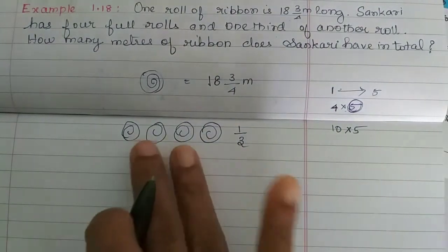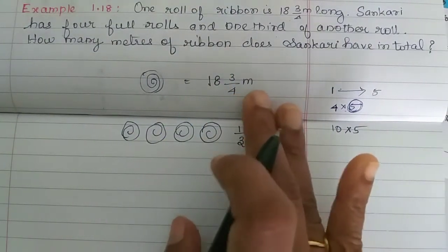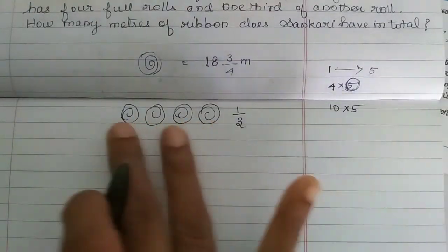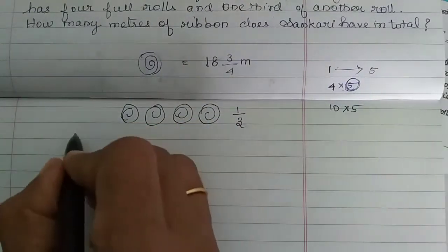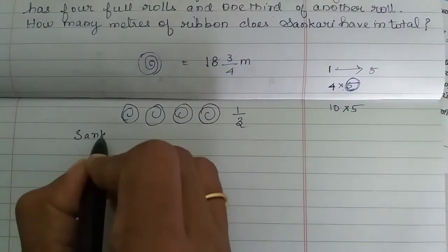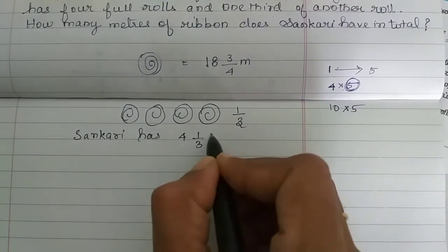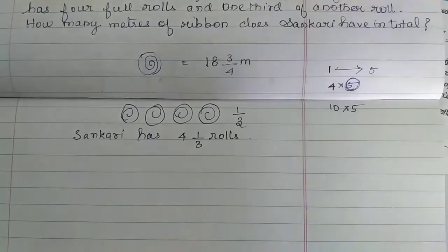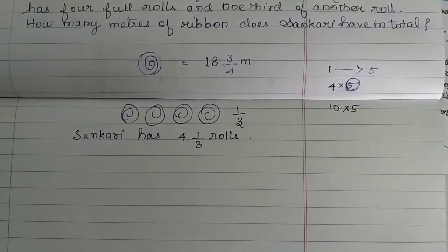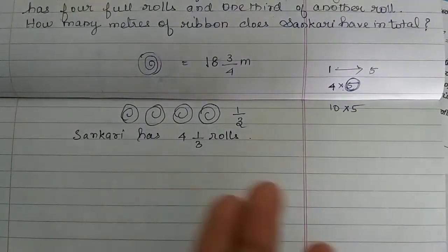1 roll is 18 3 by 4. Then, 4 roll is 4 into 18 3 by 4. So, what do you do with this? Sankari has 4 1 by 3 rolls. So, this is the mixed fraction. Next step is easy to do.